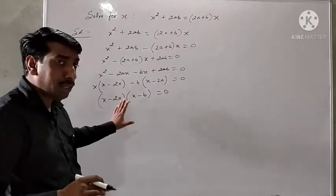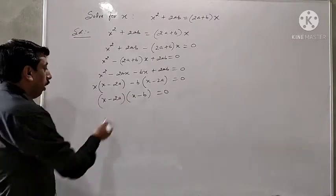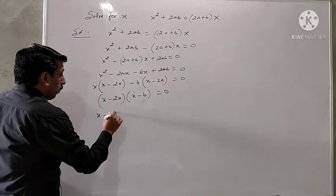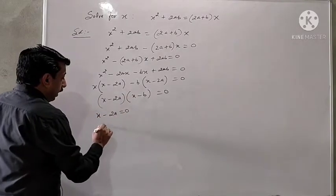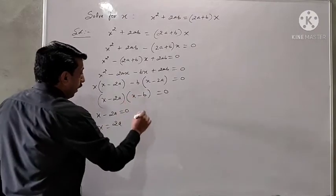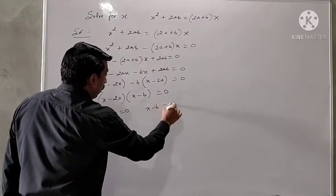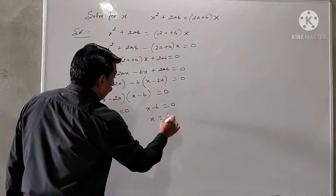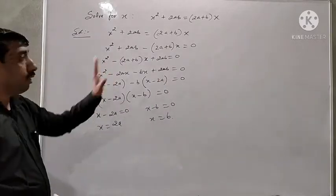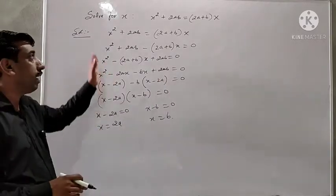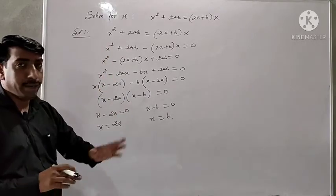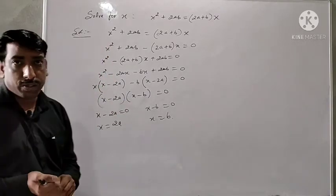If we put x minus 2a equal to 0, we get x equal to 2a. And if we put x minus b equal to 0, then x equal to b. So the roots of this equation, the values of x that will satisfy this equation are 2a and b. Thanks for watching.